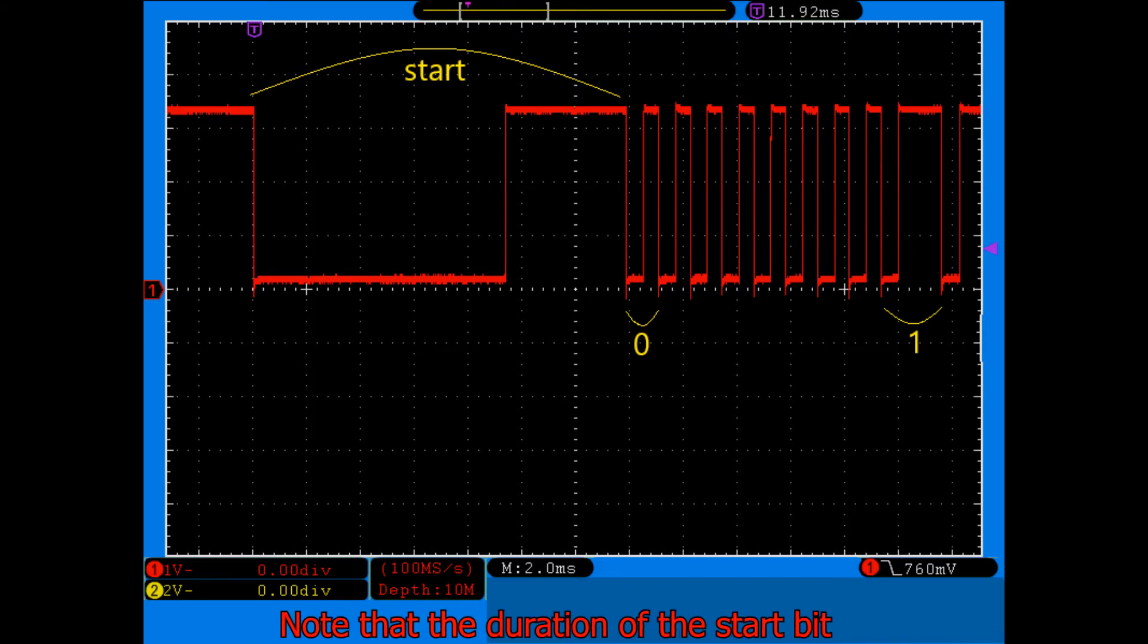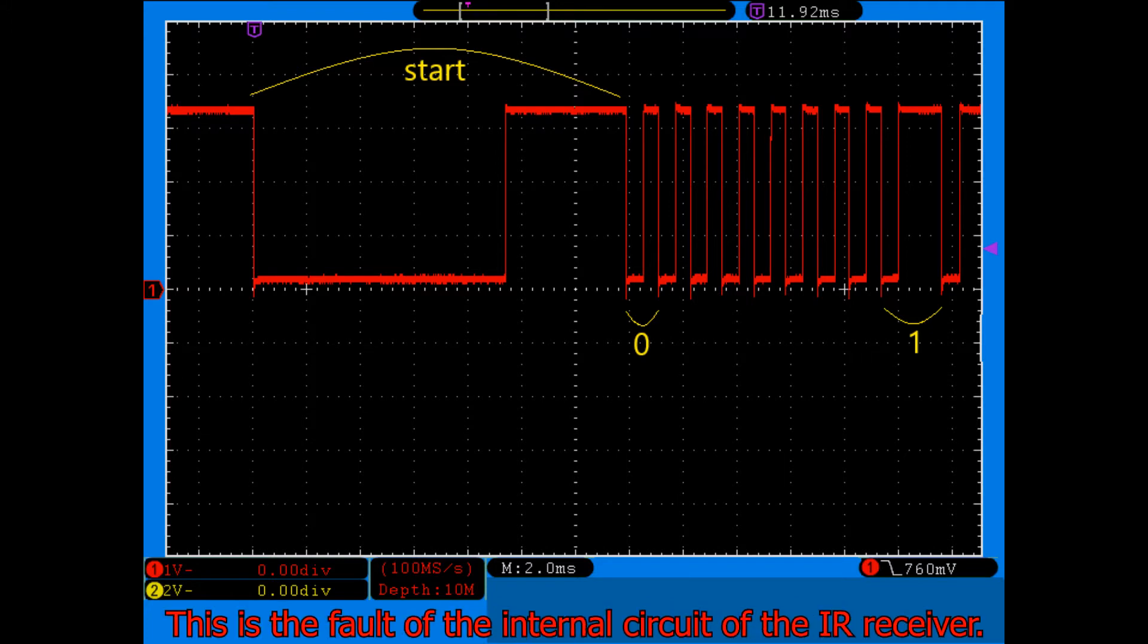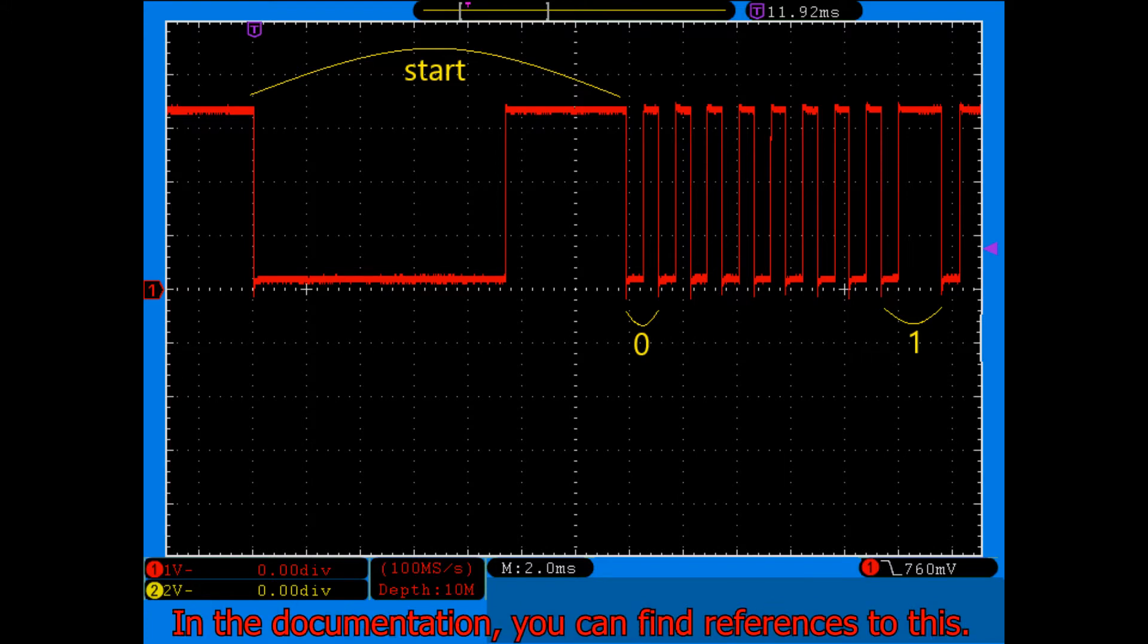Note that the duration of the start bit without pause is just over 9ms. This is the fault of the internal circuit of the IR receiver. In the documentation you can find references to this.